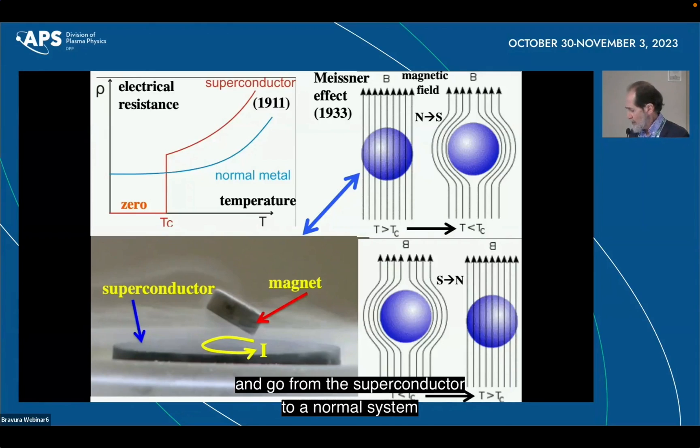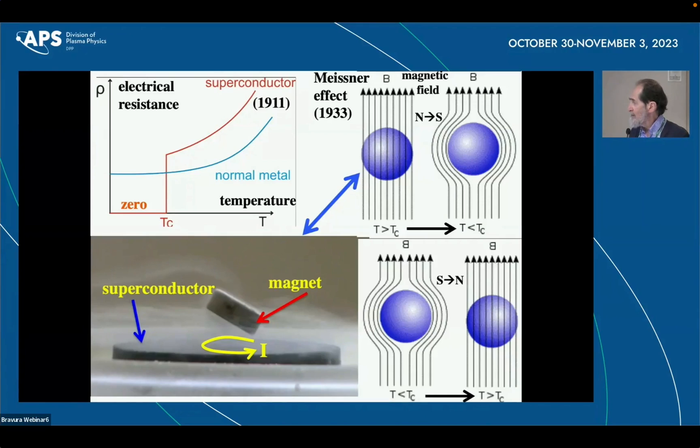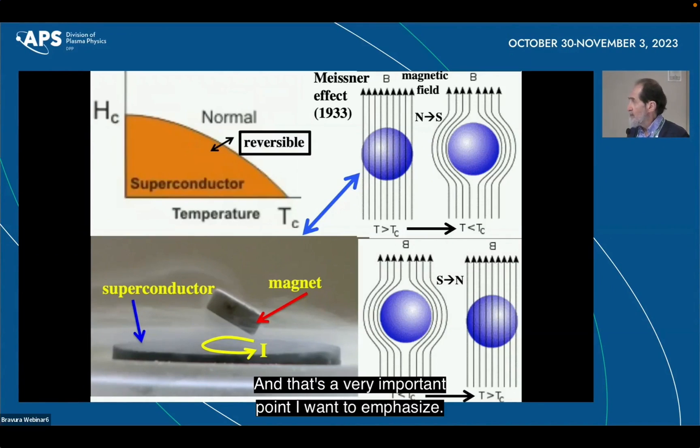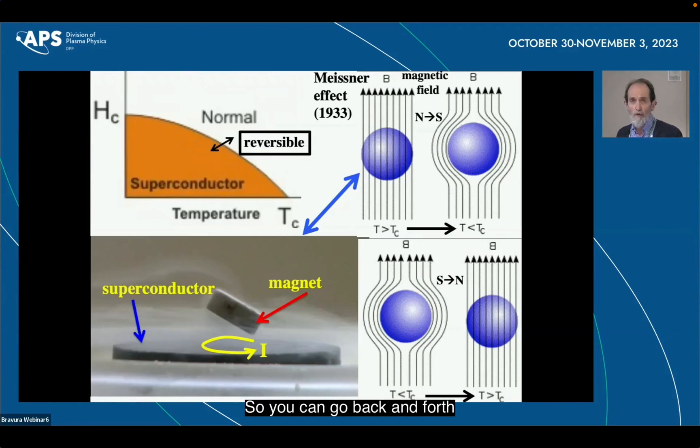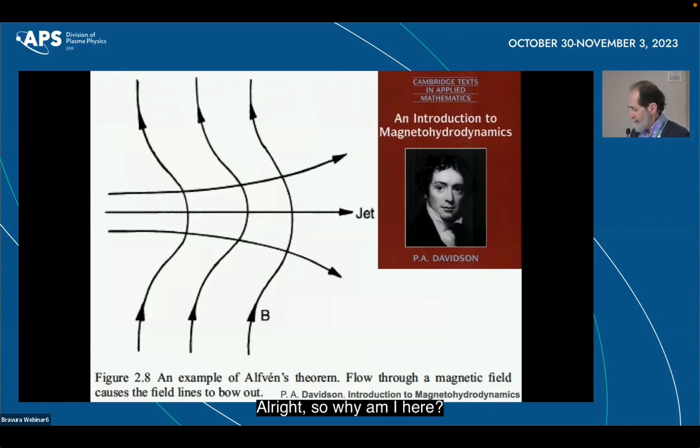You can also do this in reverse and go from the superconductor to the normal system by heating, and that's a very important point I want to emphasize. The transition is reversible, so you can go back and forth, and it's not going to involve any dissipation. It's a reversible phase transition. All right, so why am I here? Because I think that this has something to do with things you know about, which is like this picture here.